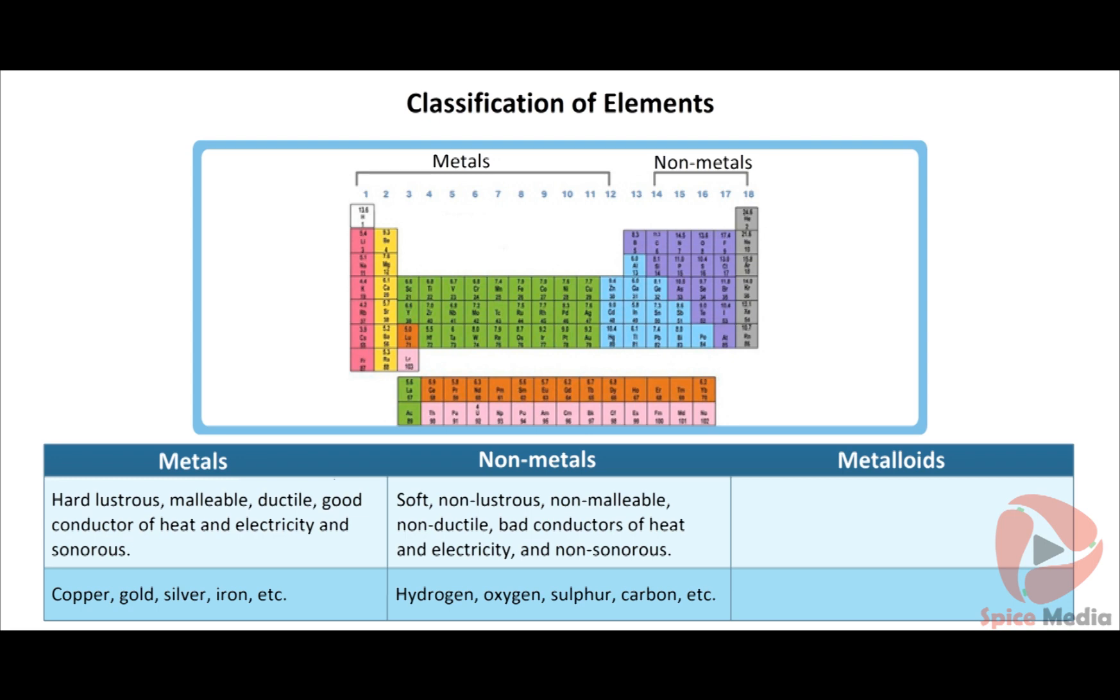Metalloids: Very few semi-metals are known as metalloids, which show properties of metals as well as non-metals. Examples: boron, silicon, germanium, etc.